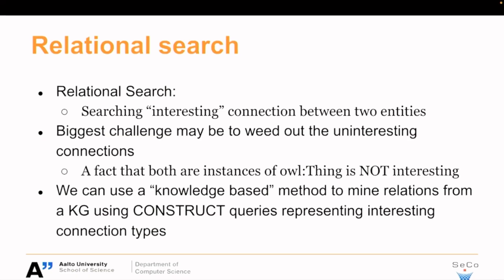We are talking about relational search. The idea in relational search is finding interesting connections between two entities, in this case in a knowledge graph. The key word here is 'interesting,' because the bigger challenge is to filter out the uninteresting connections. For example, we are not interested in cases where two resources in the knowledge graph are instances of all things.